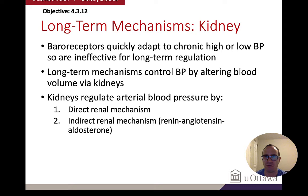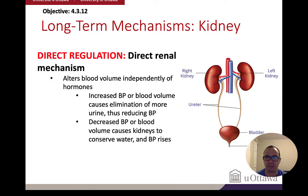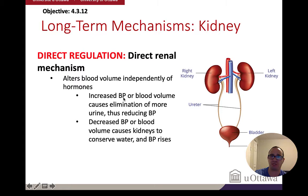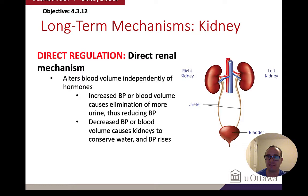There are two types of renal regulation: direct and indirect. Direct regulation is simple: the kidneys filter blood, and the higher the pressure, the more blood is filtered and the more urine is output. With increased blood pressure and blood volume, we get increased elimination of urine, which causes a reduction in blood volume and therefore reduces blood pressure. Decreased blood pressure has the opposite effect. This is a purely mechanical process related to filtration.